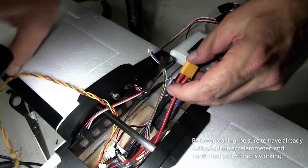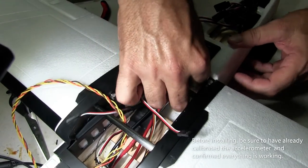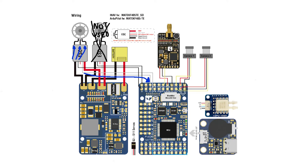Before mounting the flight controller in the fuselage, make sure you have already calibrated your accelerometer in iNav. And also make sure the red wire on your ESC signal pin is not connected to the flight controller.